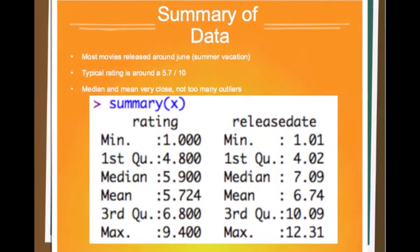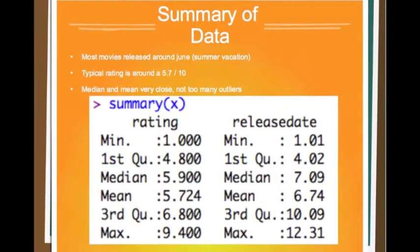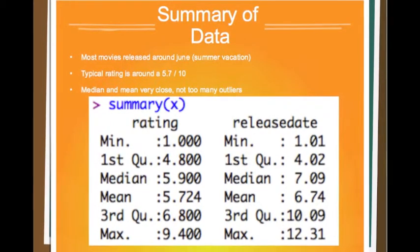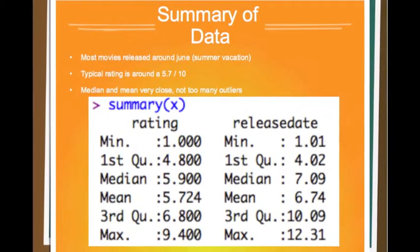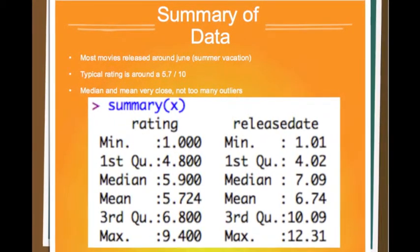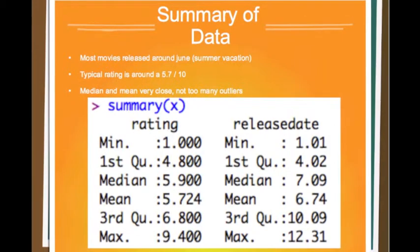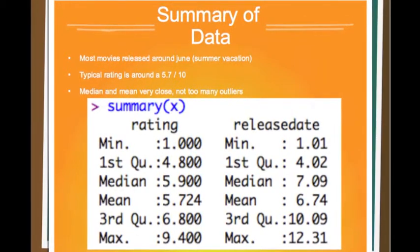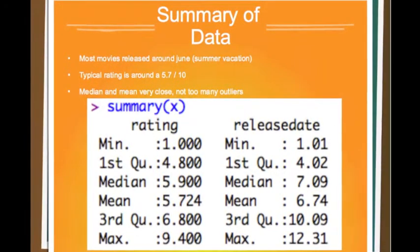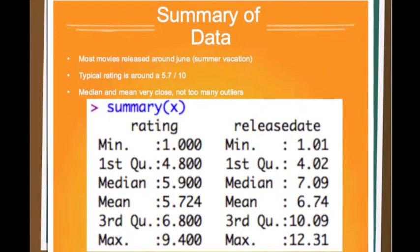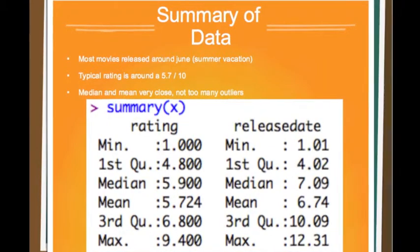Looking at a summary in R, we can see that the typical rating of a movie is around 5.7. A lot of movies were released around June, so the summer. Our median and mean are very close, which tells me there are not too many outliers.